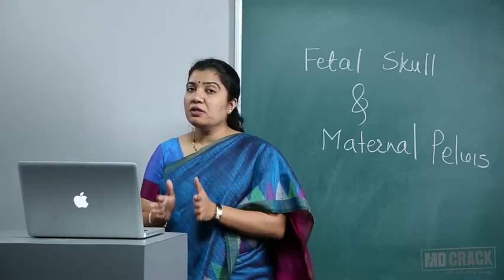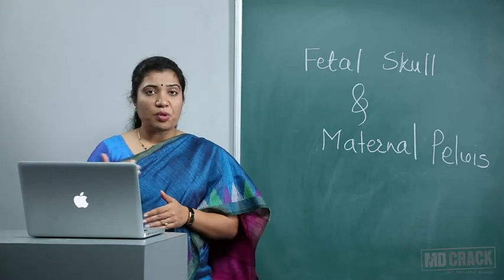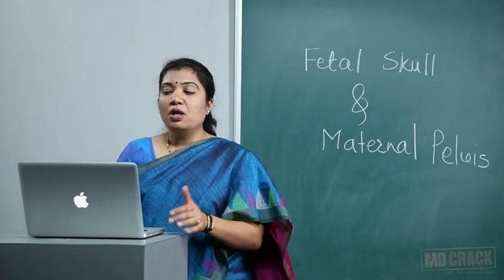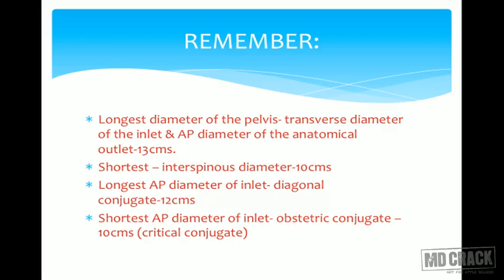Summary of key pelvic diameters: Longest diameter of the pelvis is the transverse diameter of the inlet and AP diameter of anatomical outlet — 13 cm. Shortest is the interspinous diameter — 10 cm. Longest AP diameter of inlet is diagonal conjugate — 12 cm. Shortest AP diameter of inlet is obstetric conjugate — 10 cm. If obstetric conjugate is less than 10 cm, the pelvis is considered contracted.